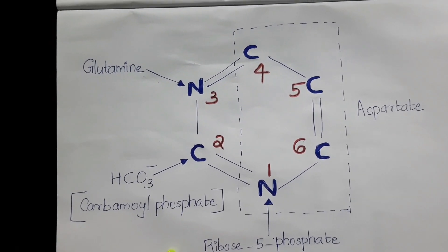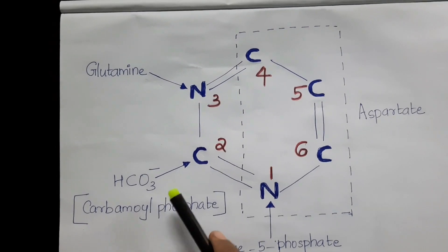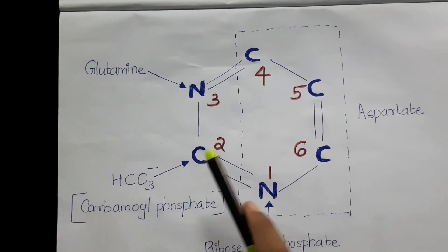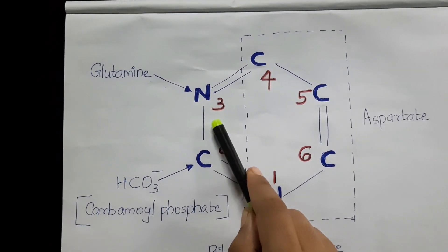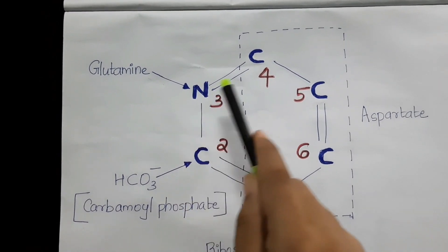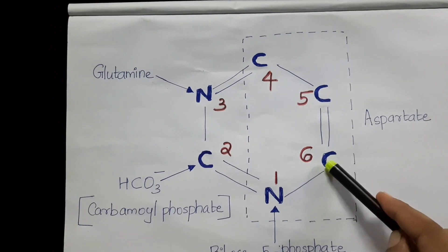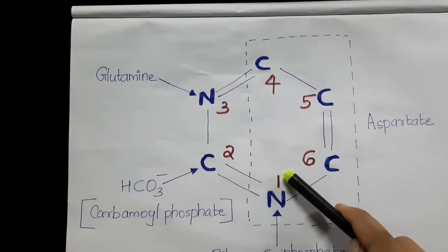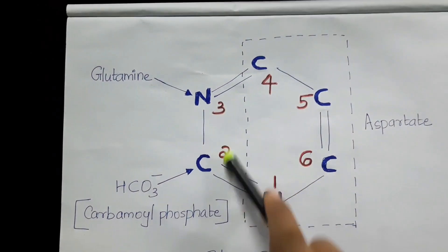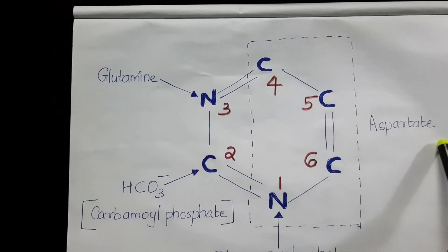After two or three reactions, it will finally donate this carbon atom. The nitrogen in the third position is from glutamine. Carbon in the fourth, fifth, and sixth positions, along with nitrogen in the first position, have been donated completely by aspartate.